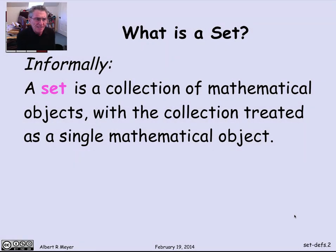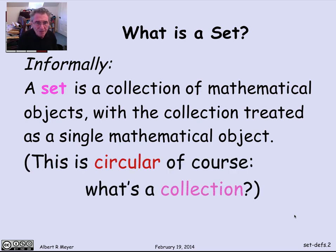So informally, a set is a collection of mathematical objects. And the idea is that you treat the collection of objects as one new object. And that's a working definition. But of course, it's a circular definition. This is not math yet, because I haven't defined what a collection is. And a collection is no clearer or easier to define than a set is.